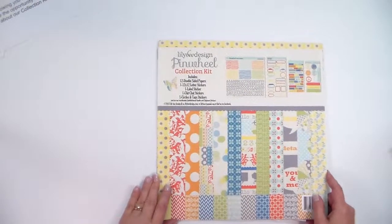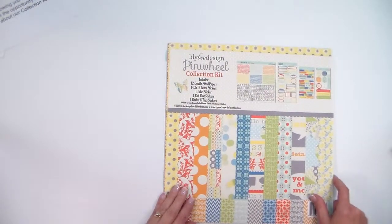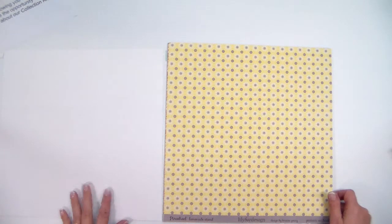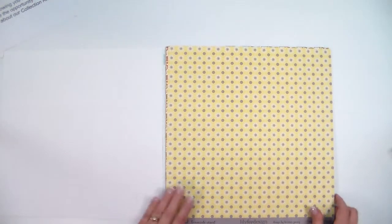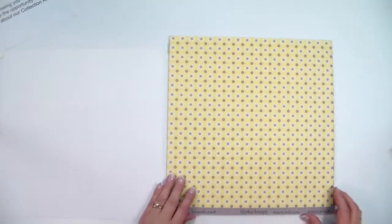In this particular collection, we've got 12 sheets of double-sided paper. I'm going to show those to you right now and while I'm doing this, I'm going to let you know a little bit about our kits.